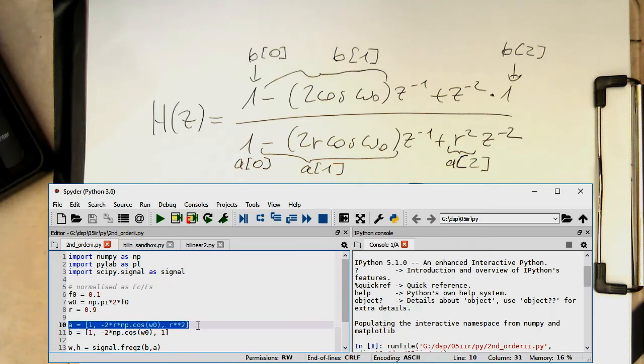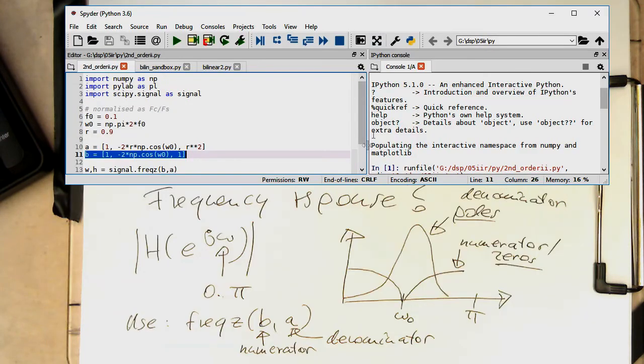So that's the denominator here. So we've got here the one and then the minus two r cosine omega zero. And then the r square here. And then the b coefficient here. So that's the one from above here. So that's one minus cosine and then a one again. And so that's all good.